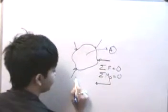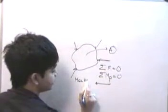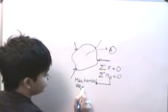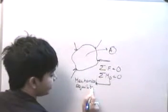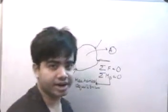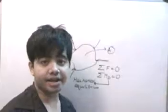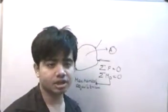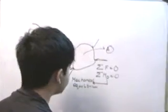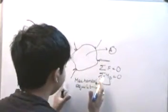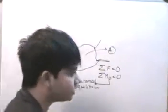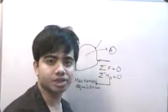So if these two conditions are satisfied, we say that the body is in mechanical equilibrium. It basically means that the body doesn't accelerate — nor will it have any rotational acceleration, nor any translational acceleration. But the body can move about with some kind of constant velocity.